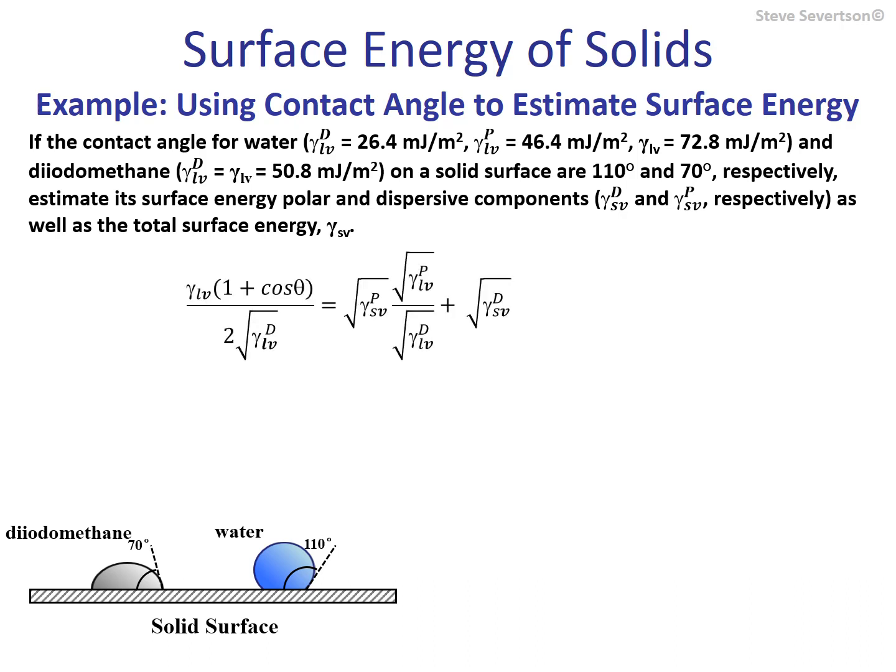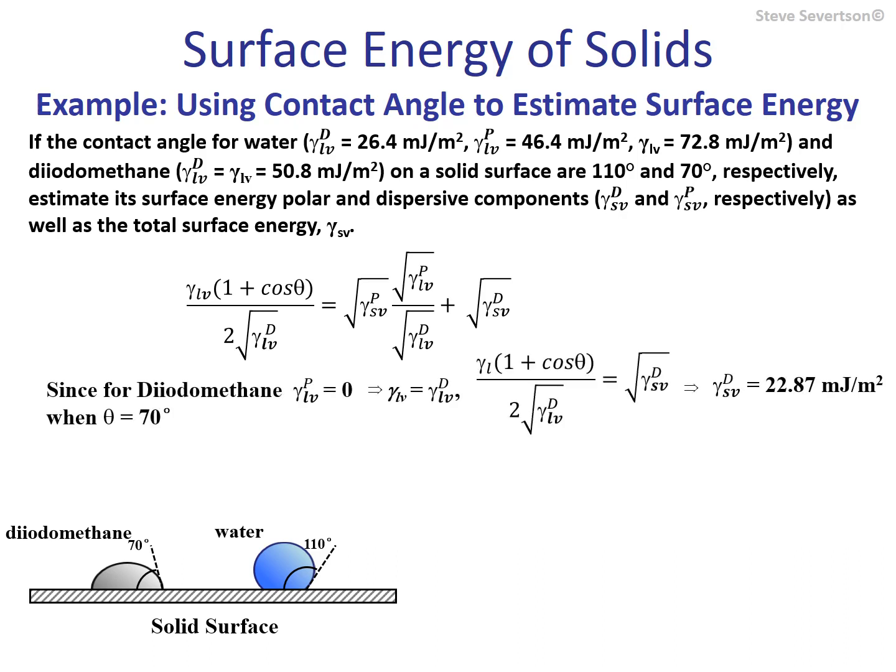Using our equation, let's first look at diiodomethane, which has a polar component equal to zero. This tells us that the first term on the right-hand side of the equation is zero. We need the contact angle measurement, the surface tension of the diiodomethane, and its dispersive component — and we have all of these. So we can calculate the dispersive component of the surface energy for this polymeric material, and we get a value of 22.87 millijoules per meter squared.